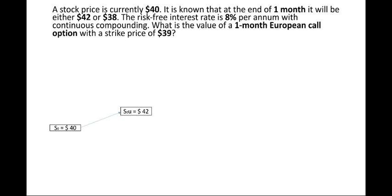It is mentioned that the price will be either $42 or $38 in future, so this is a binomial tree. As we can see on the left side, the price will be moving from $40 to either $42 or $38. Now we are supposed to determine the probability of upward movement.